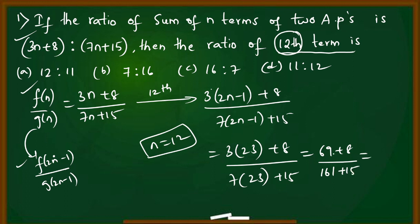So 3 into 23 is 69 plus 8 divided by 7 into 23. 7 times 23 is 161 plus 15. This equals 69 plus 8 which is 77, and 161 plus 15 which is 176. So we get 77 by 176.